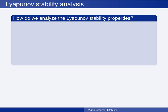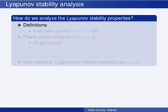You have by now learned the definitions of stability of equilibrium points of nonlinear time-invariant systems. How do we analyze these Lyapunov stability properties? How do we decide whether an equilibrium point is unstable or stable, and possibly asymptotically stable or exponentially stable?